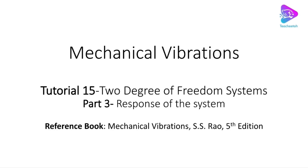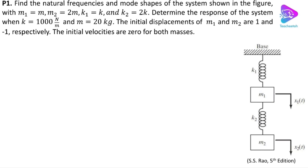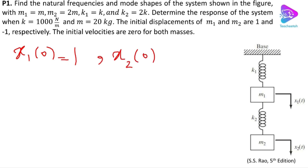Let's begin. Previously we wanted to find the natural frequencies and mode shapes of the system shown in the figure, and we knew that m1 is equal to m, m2 equals 2m, k1 equal to k and k2 equal to 2k. Now we want to find the response of the system and the values for k and m are given. We also have the initial conditions: the initial displacements of m1 and m2 are given, so x1 at 0 is equal to 1 and x2 at 0 is equal to minus 1.